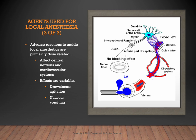Adverse reactions to amino ester and amino amide local anesthetics are usually dose-related. Adverse effects can include unconsciousness, respiratory arrest, nausea, vomiting, visual disturbances, tingling, slurred speech, excitability, hypotension, bradycardia, ventricular arrhythmia, and in severe cases cardiac arrest. Systemic toxicity is most commonly due to inadvertent intravascular injection during peripheral nerve infiltration — meaning instead of bathing the nerve with anesthetic, it gets accidentally injected into a vessel.